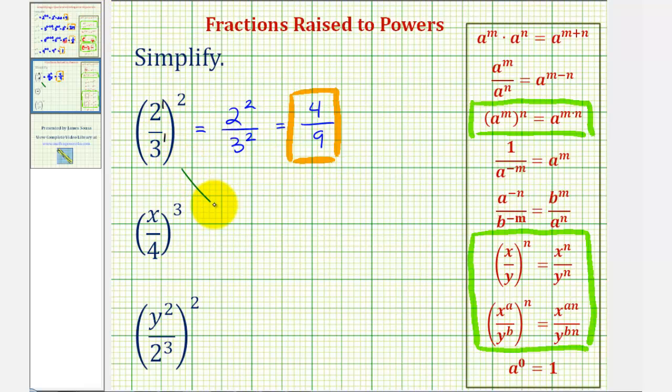Of course, the other option is just to expand this. Our base is two-thirds and the exponent is two. Therefore, we have two factors of two-thirds. Two-thirds squared would just be two-thirds times two-thirds, which of course is also equal to four-ninths. But we do want to get used to using these exponent rules, because when we start mixing in negative exponents, it becomes much more difficult to just expand and then simplify.